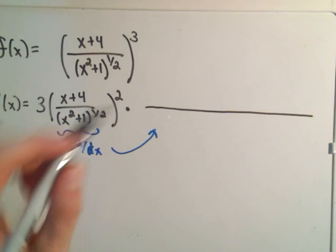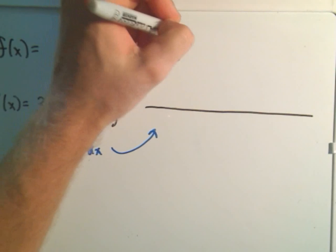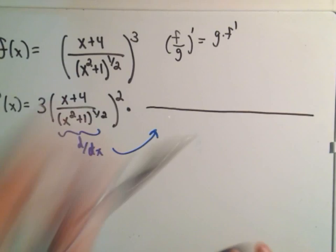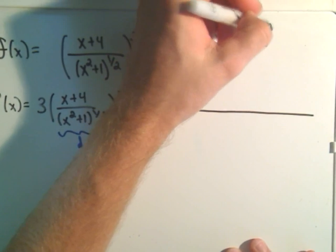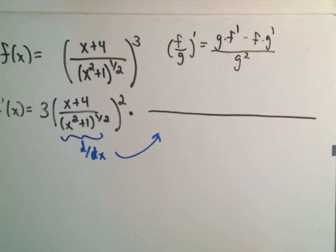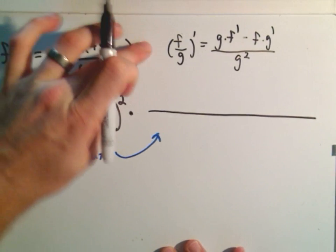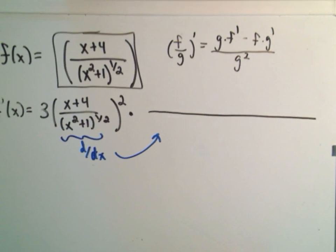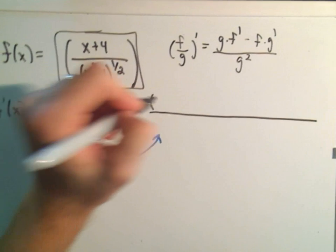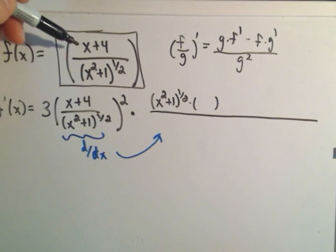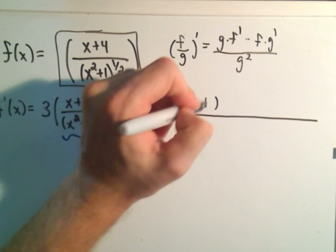And remember the quotient rule says if you have F over G and we want the derivative of that, it says you take the bottom times the derivative of the top minus the top times the derivative of the bottom all over the bottom squared. So we're going to use that rule. Basically we did the outside part so we're just looking at the fractional part when we take the derivative. Okay, so the bottom is just x squared plus one to the one-half power. Then I have to multiply that by the derivative of the numerator which would just be one plus zero, so we'll just put times one there.